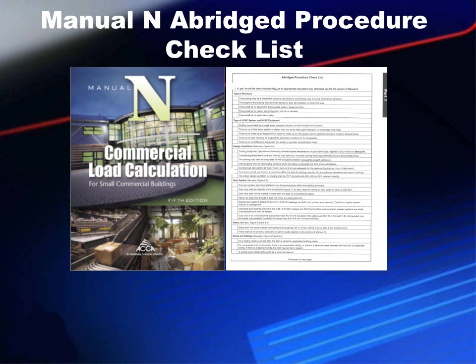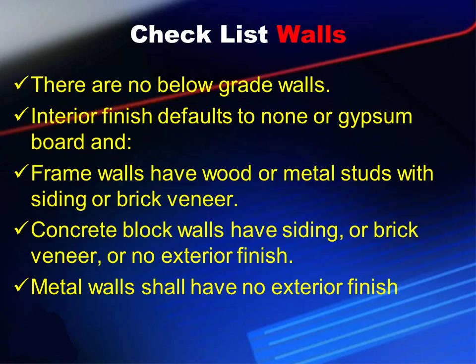You're going to have to go to a full load calculation of some sort. First, let's look at walls. There are no below-grade walls. Interior finish defaults to none or gypsum board. Frame walls have wood or metal studs with siding or brick veneer. Concrete block walls have siding or brick veneer and no exterior finish. Metal walls shall have no exterior finish.